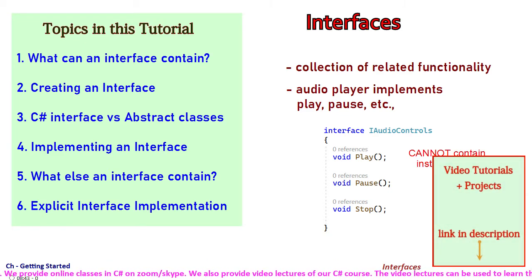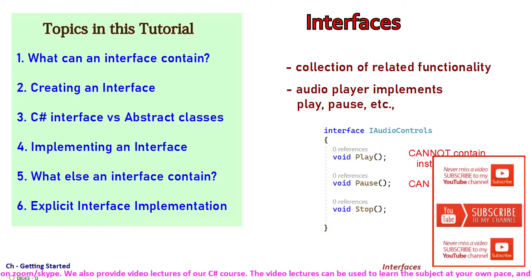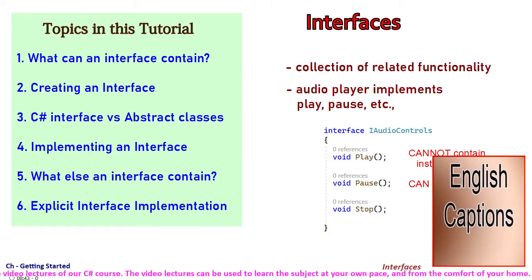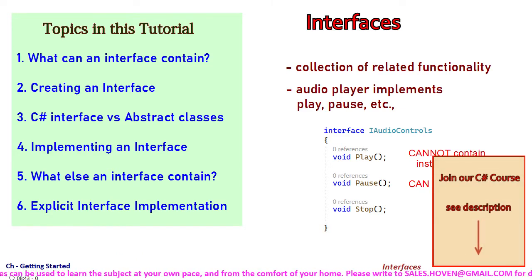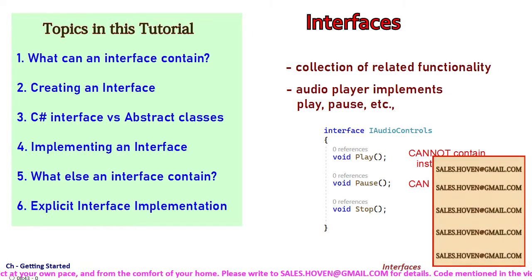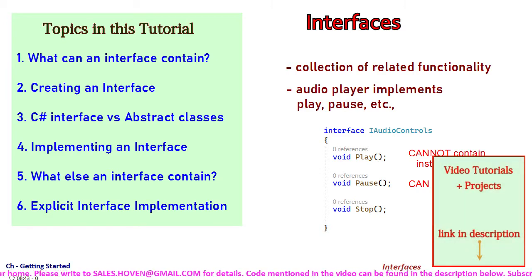An interface cannot contain instance data members. They can however contain static data members, but that's an entirely different thing because static members are tied to a class or interface but not to a specific object. So an interface cannot contain anything that is specific to an object, for example, it cannot contain data members. They contain functionality.